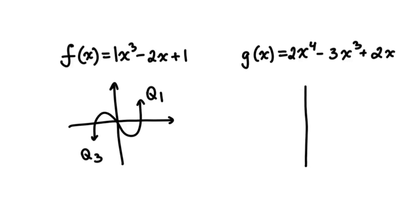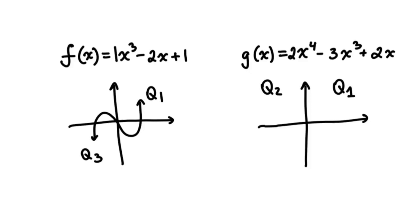For an even degree function like g of x, the quartic function — or the function of degree 4 — it follows the end behavior of a parabola with a positive leading coefficient. In this case, the function will go from quadrant 2 to quadrant 1, just like a parabola that opens up. This function has degree 4, so it has a maximum of 4 x-intercepts and 3 turns.